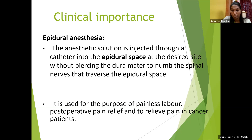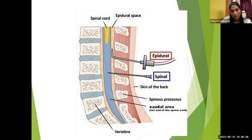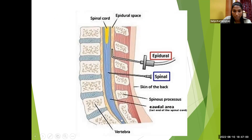Cancer patients have a lot of pain. The catheter is inserted through the skin, spinous ligaments, and muscles into the epidural space. This is the lower end of the spinal cord, where the cord ends near L1 and spinal meninges extend to S2. Below L1, there is only the cauda equina and spinal meninges. The epidural catheter is inserted into the epidural space at the desired level.